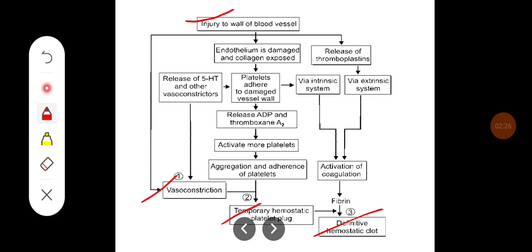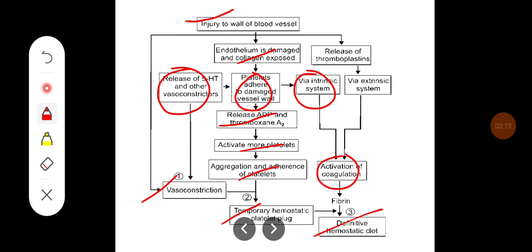Vasoconstriction occurs due to mechanical injury as well as the release of serotonin and other vasoconstrictors. The temporary hemostatic plug forms when collagen is exposed and platelets adhere to the damaged vessel wall via von Willebrand factor. There will be release of ADP and thromboxane A2, which activate more platelets, causing aggregation and further adherence of platelets to each other and to the damaged vessel wall. This also initiates coagulation through the intrinsic pathway, while release of thromboplastins activates the extrinsic mechanism.